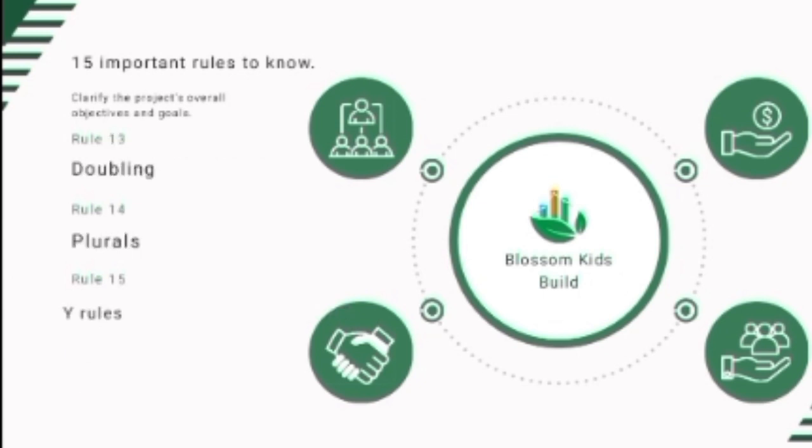Rule number thirteen: doubling. In a one-syllable word like 'win,' where one short vowel is followed by one consonant, double the consonant before adding a suffix that starts with a vowel. For example, 'winner,' 'winning,' 'winnable.' You need to double the consonant before adding the suffix.